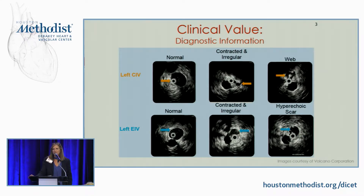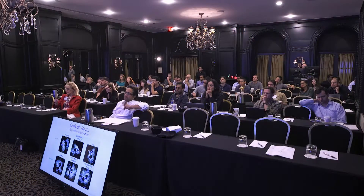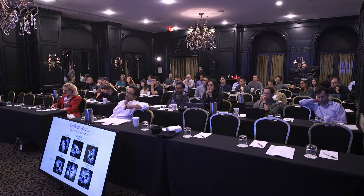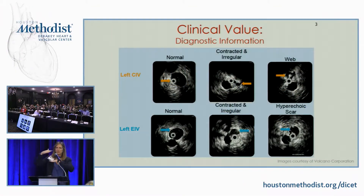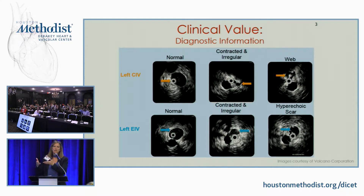Conventional venogram has a problem too. If you do a regular venogram, the biggest issue is pancaking. You can see on a regular venogram — it's an AP view — so the vessel can be collapsed flat, and it's a long flat vessel, but on a venogram it'll look totally normal. You really need IVUS to show you the three-dimensional, or at least the circumferential diameter of the vein.